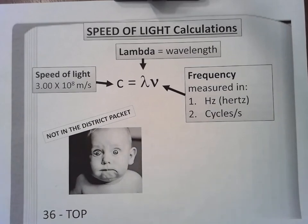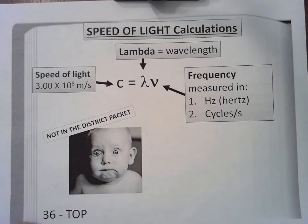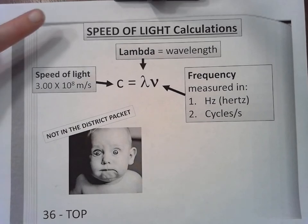We're going to start the speed of light calculations. I'm going to break this lesson up into three separate videos: the first lesson over the formula, the second lesson will be over solving for wavelength, and the third lesson solving for frequency. On the top of page 36 in your notebook you should have the title 'Speed of Light Calculations.'